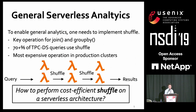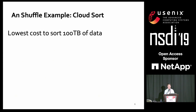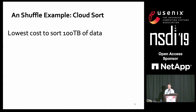So how can we perform cost-efficient shuffle on a serverless architecture? To study this problem, we use the CloudSort benchmark, a competition benchmark that ranks lowest cloud cost to sort 100 terabytes of data. We use this benchmark because we are concerned not only about performance but also about how much money we spend, since we want good performance and cost savings at the same time.